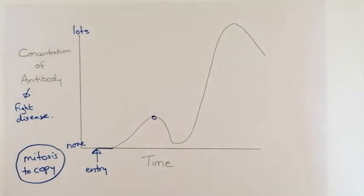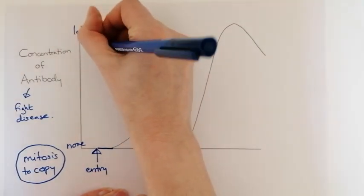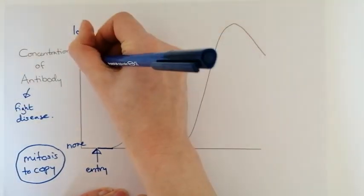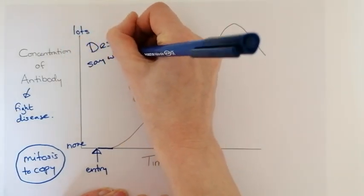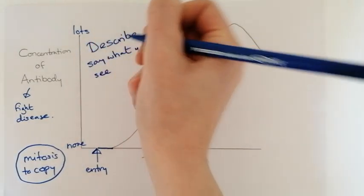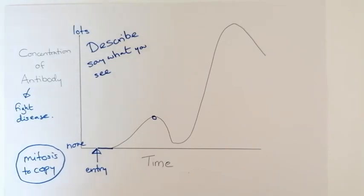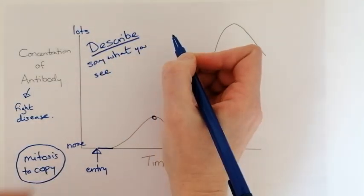So if you were asked to describe the graph, when we describe we say what we see. It doesn't matter if you understand why it happens, you just say what you see. A describe question you literally say what you see.